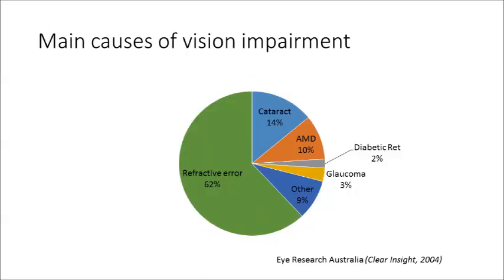This figure, adapted from the Clear Insight report, shows the main causes of vision impairment. These statistics should not be new to you, as we've covered these at length throughout the orthoptic course. Uncorrected refractive error makes up the largest component, followed by cataract, then age-related macular degeneration, other diseases, glaucoma, and diabetic retinopathy.